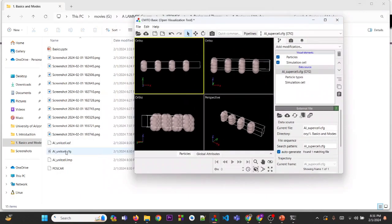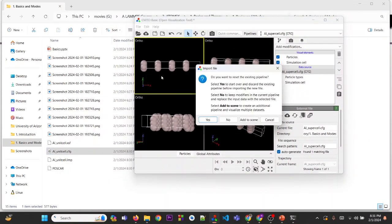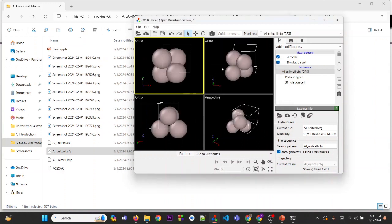If you want to visualize this, you can just take the CFG file, drop it into OVITO, and here's our structure. There are four aluminum atoms.